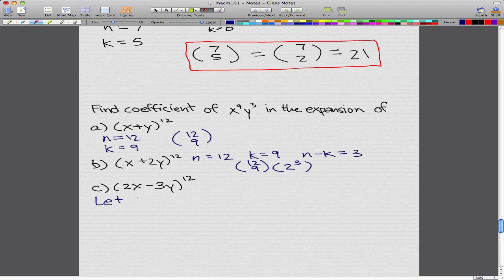So let a equals 2x, and let b equal -3y. This whole equation can now be simplified to (a+b)^12.